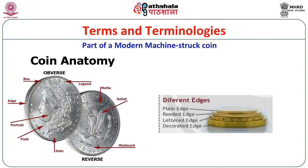Now for the detailed anatomy of a coin. On a modern machine-struck coin you can see: rim, legend, edge, portrait, field, date, motto, relief, and mint mark. Coins also have different edge types: plain edge, reeded edge, lettered edge, and decorated edge.